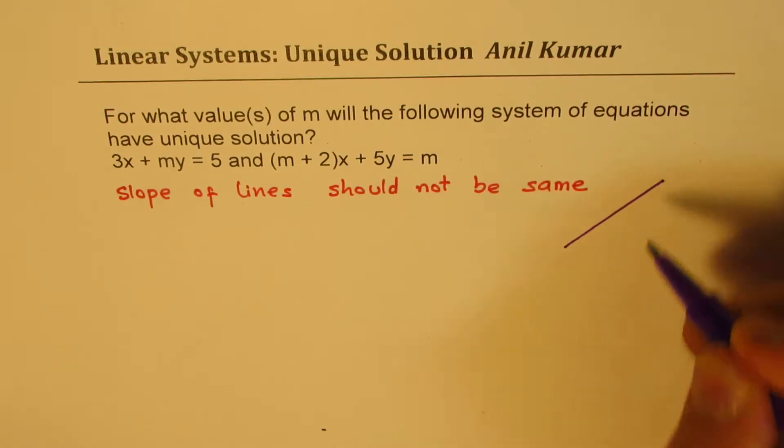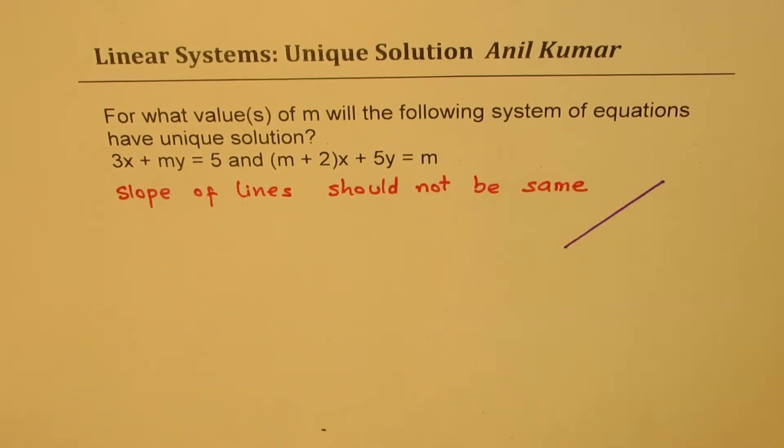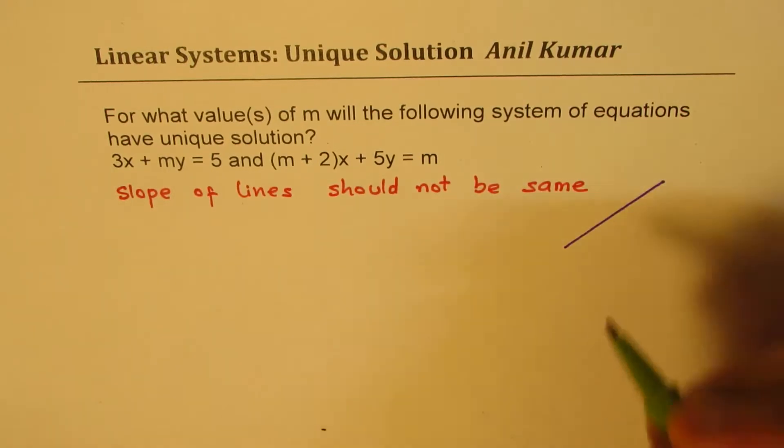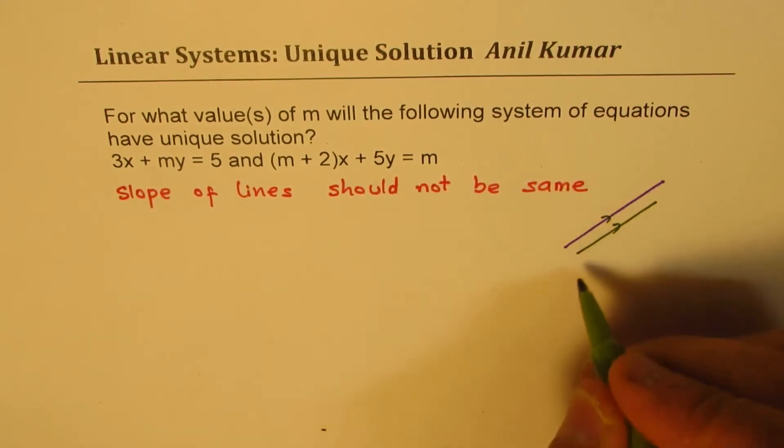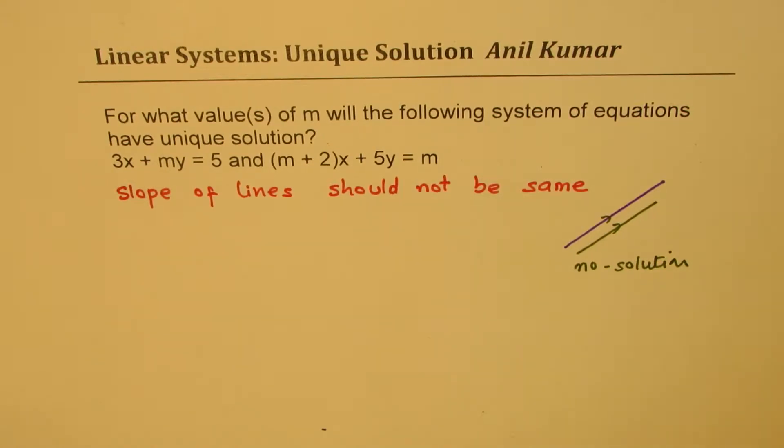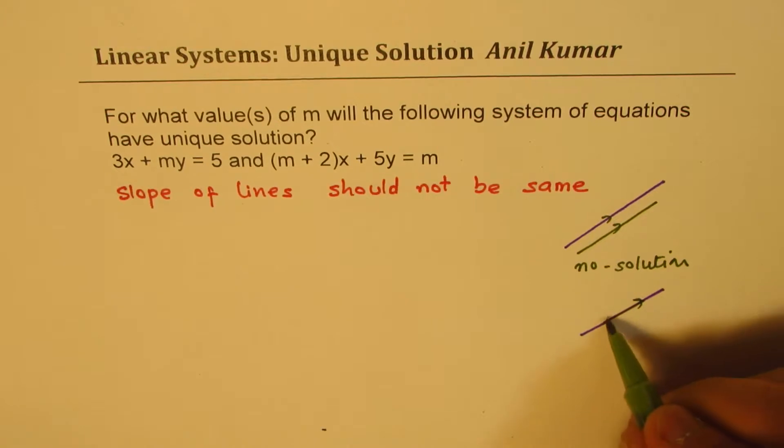If we have a line like this and another line which is kind of parallel, in that case we have no solution. But we could have a situation where they are overlapping, in that case we have many solutions.